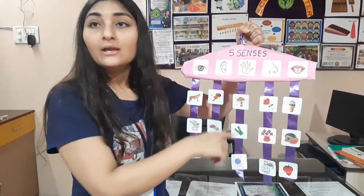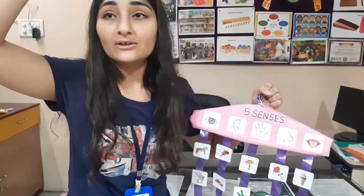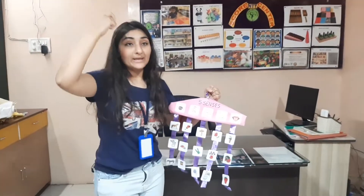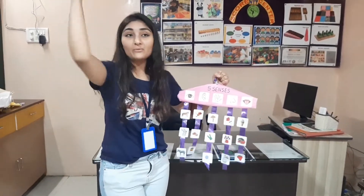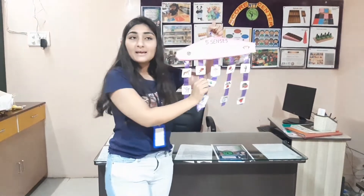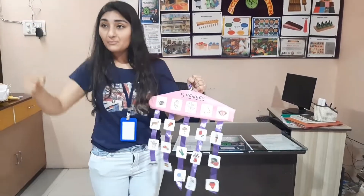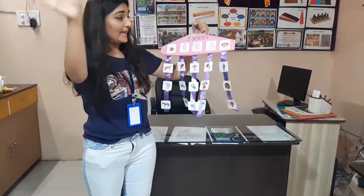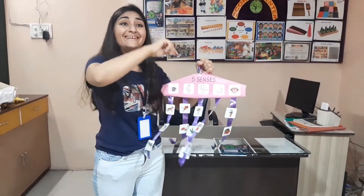Now, what is the use of our hands? We hold an umbrella. We carry our umbrella so that we don't get hurt. So, we hold the umbrella with the help of our hands. This is a zip. We zip with the help of our hands. And a ribbon.